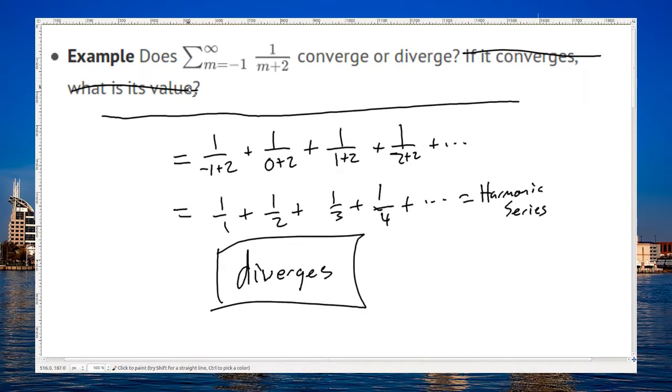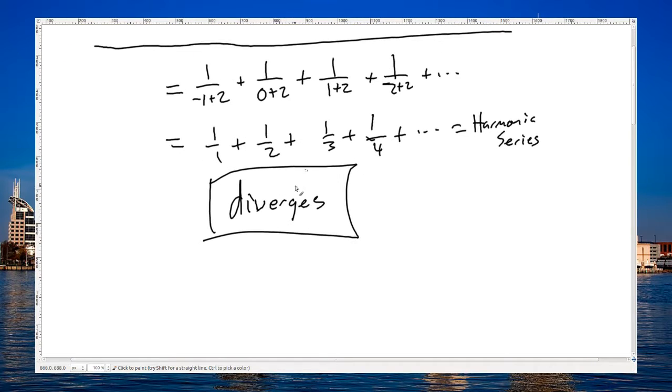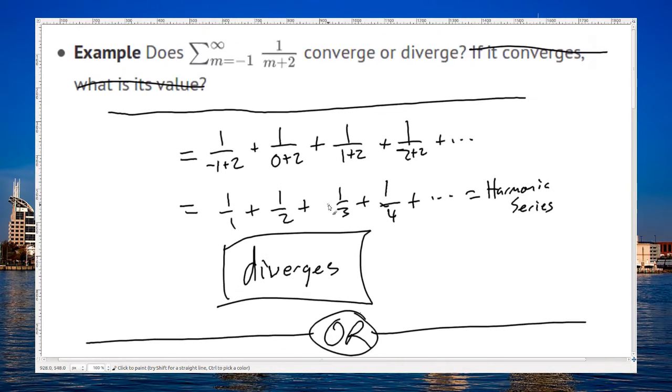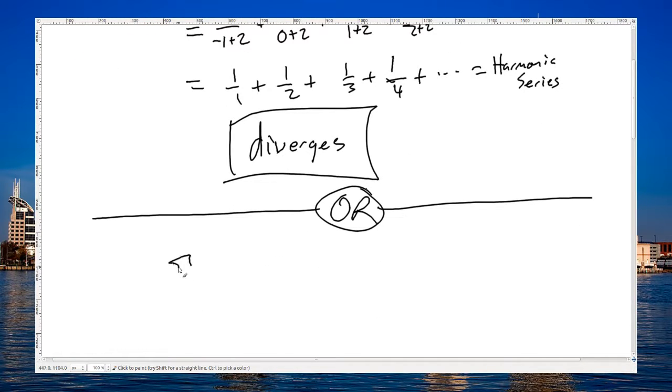Just one of those useful facts to remember is that the harmonic series diverges. So, we don't have to worry about what is its value. Okay, let me do this an alternate way, though. Alright, and I'll rewrite the original series here. We've got the sum from m equals negative 1 up to infinity, 1 over m plus 2.